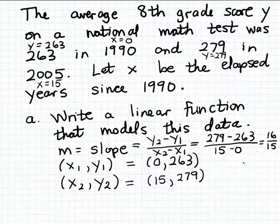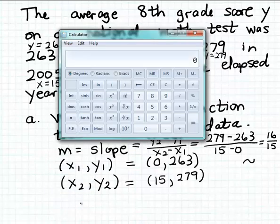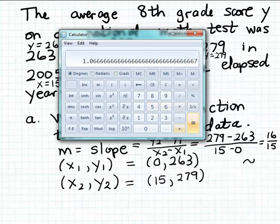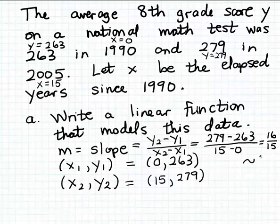Let's estimate the slope to two decimal places using a calculator. Dividing 16 by 15 gives us approximately 1.07. So our slope is 1.07.